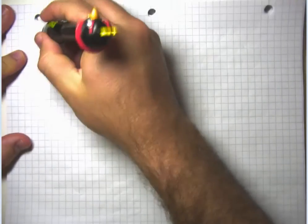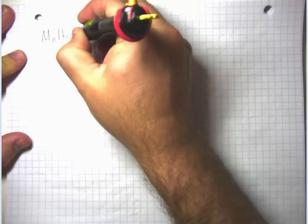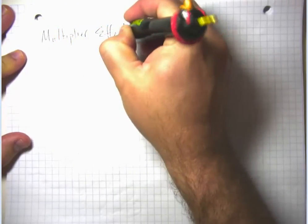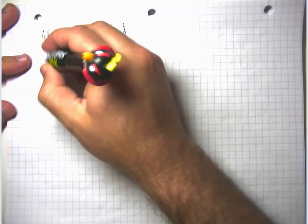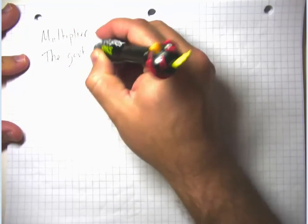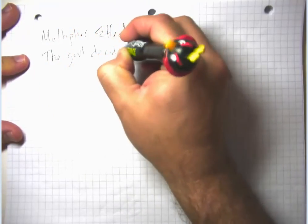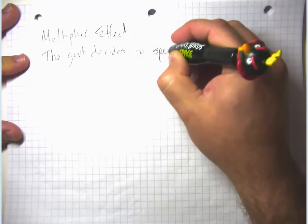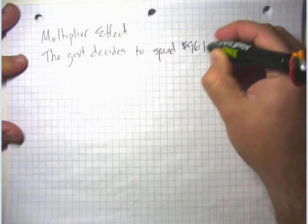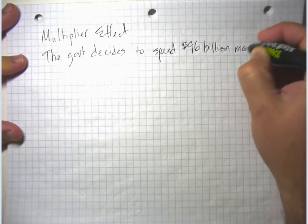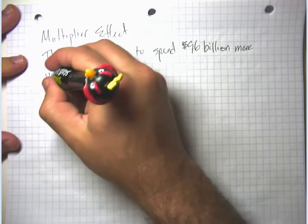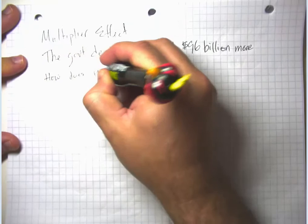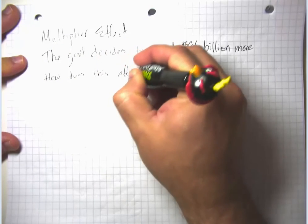In this video segment, I'm going to talk about what's called the multiplier effect. Let's imagine a scenario that goes something like this: the government decides to spend $96 billion more than people thought. How much does this affect aggregate demand?